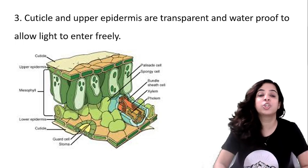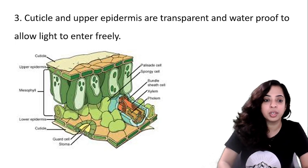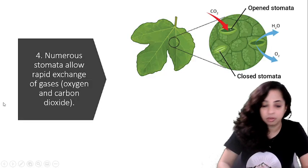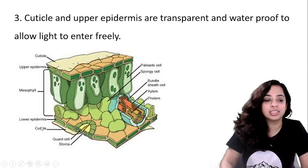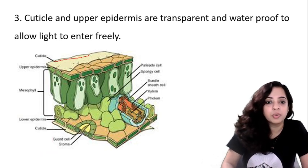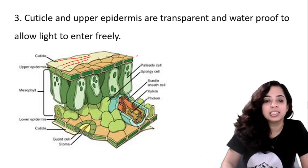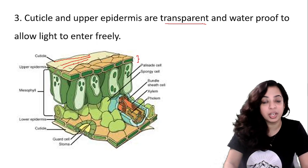The third point is cuticle and upper epidermis. Can you see in the diagram cuticle and upper epidermis? So see here, this is the cuticle and this is the upper epidermis. I'll show you with the pen. See, this is the cuticle, the upper layer, and this is the upper epidermis.